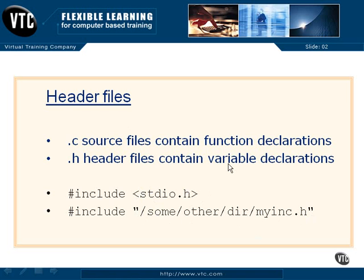Header files are created to contain our variable declarations. You should not have functions in header files because you'll never get them compiled. The header files have to be included into something else before they can be compiled, like into a .c source file — that's where your functions should stay. So that's just a little bit about header files, and we will be seeing more of them as we create some code later on.